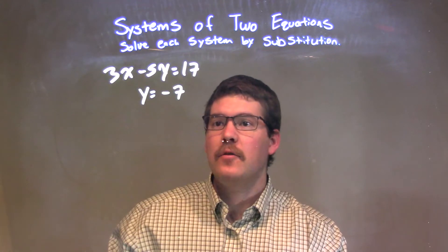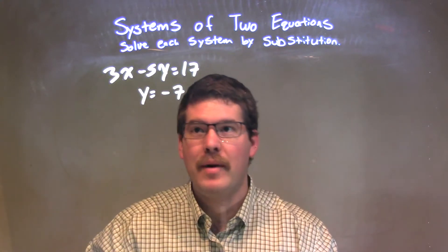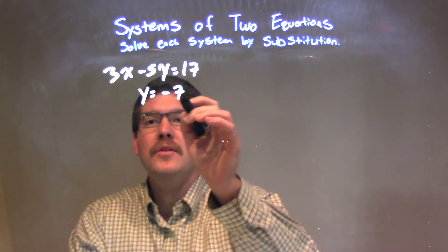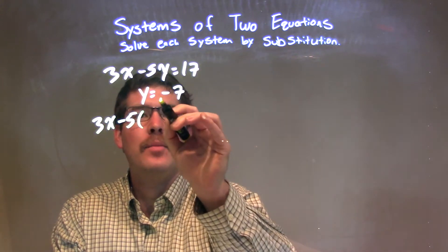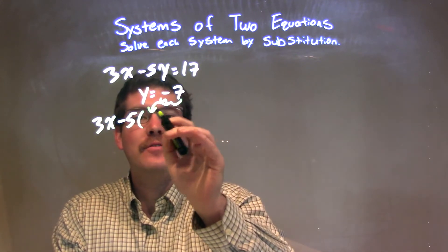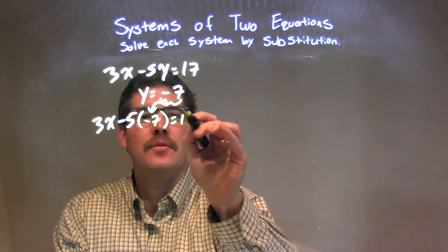Well, lucky for me, we're already given y by itself. So what I'm going to do is take the first equation, 3x minus 5, and instead of y, I'm going to plug in that negative 7 equals 17.